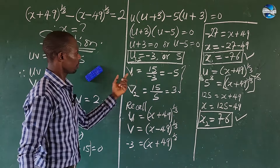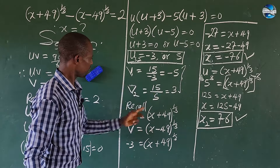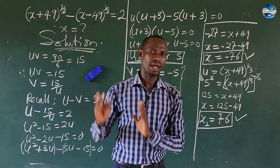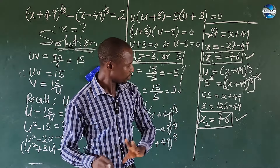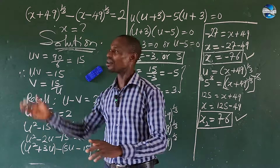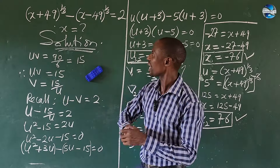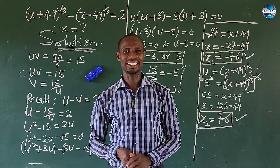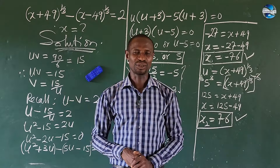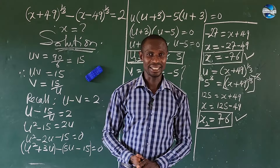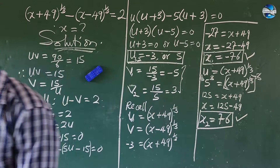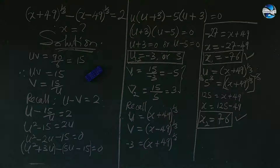If you do the same substitution for v₁ = −5 and v₂ = 3 into the v expression, you still get x₁ = 76 and x₂ = −76. So the two solutions are x = 76 and x = −76. Thanks for being here — leave a comment, this is Online Math TV and we love you dearly. Bye for now.